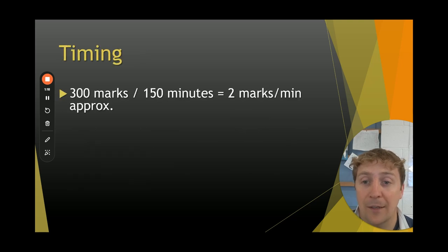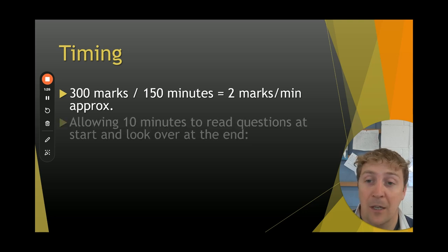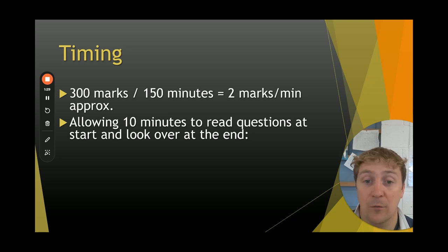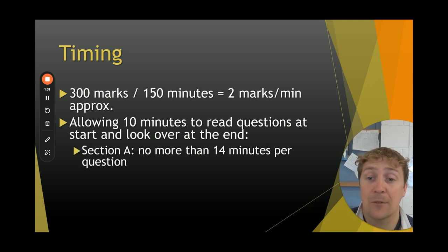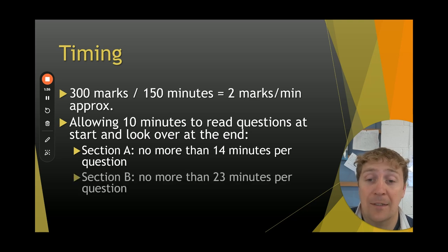For your timing then, if we have 300 marks on the paper and 150 minutes, that breaks down as approximately two marks per minute. Now if we allow 10 minutes to read the questions at the start and a couple of minutes to look over at the end, that would give us section A no more than 14 minutes per question and section B no more than 23 minutes per question. That'll give you about 10 or 12 minutes for looking over and for reading at the start.